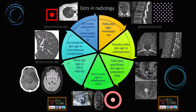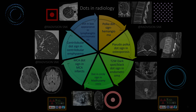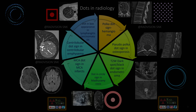Summing up all the cases: polka dot sign in hemangioma; pseudo-polka dot sign in diffuse osteoporosis; T2 dark spot sign or black dot sign in endometrioma; dot in circle sign in Madura mycosis; MCA dot sign in evolving M2 and M3 segment MCA infarcts; centrilobular dot sign in centrilobular emphysema; and dot in box appearance in lymphangitis carcinomatosis.